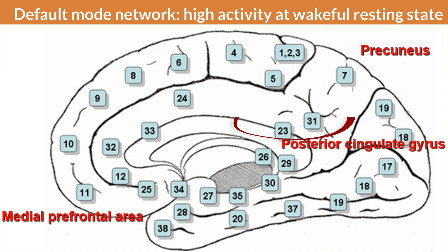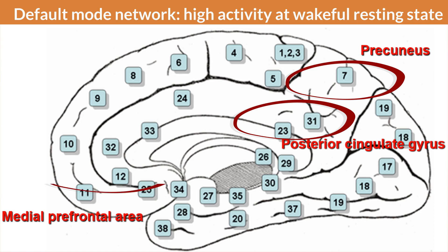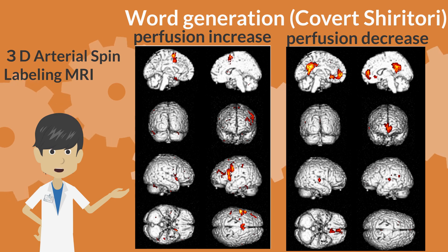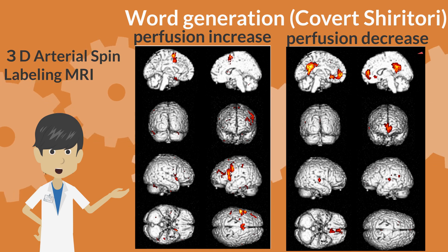The area from the posterior cingulate gyrus to the precuneus, a site of decreased perfusion in Alzheimer's disease, is a region of high perfusion in normal subjects during wakefulness and rest. This area, along with the medial frontal cortex and lower parietal lobe, belongs to the default mode network — a neural circuit activated when the brain is not engaged in conscious activity. The activity of the default mode network decreases with conscious activity, as demonstrated by changes in brain perfusion during a mental arithmetic task using the arterial spin-labeling MRI method.